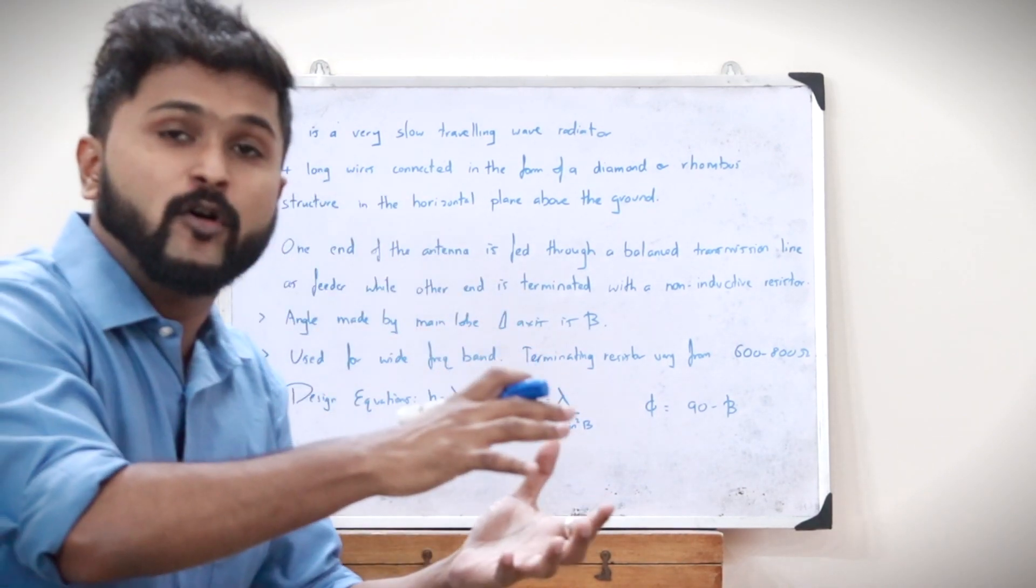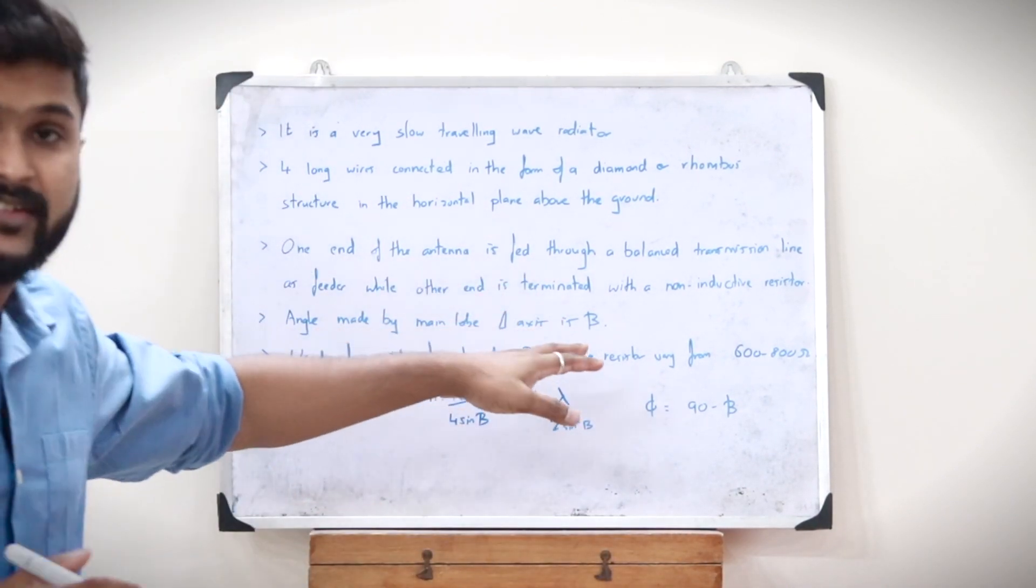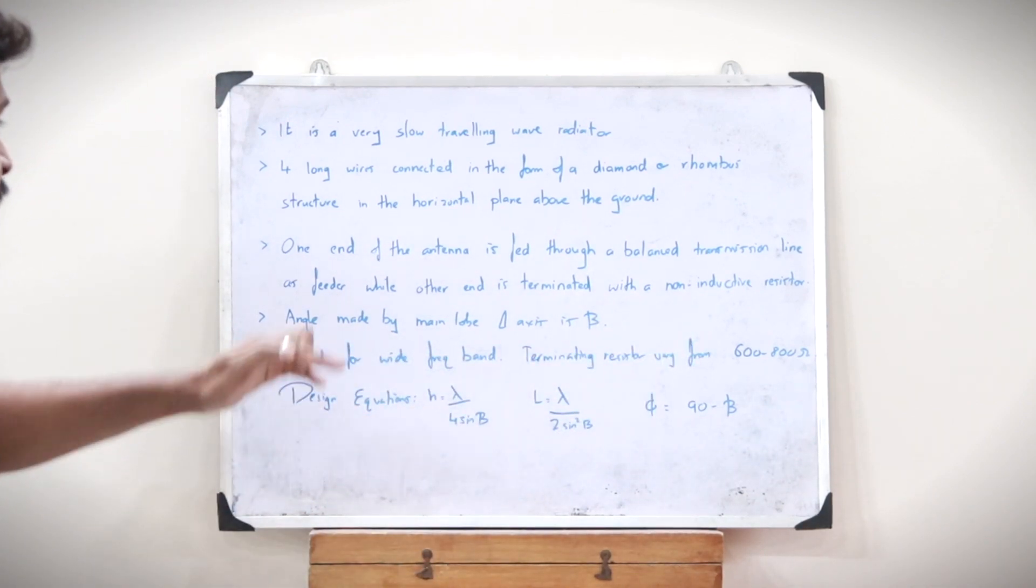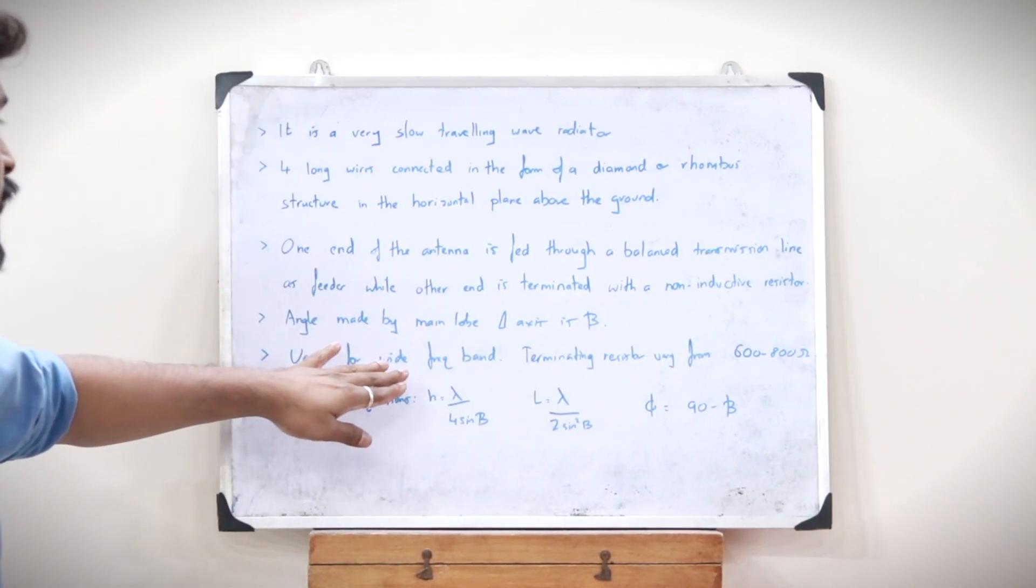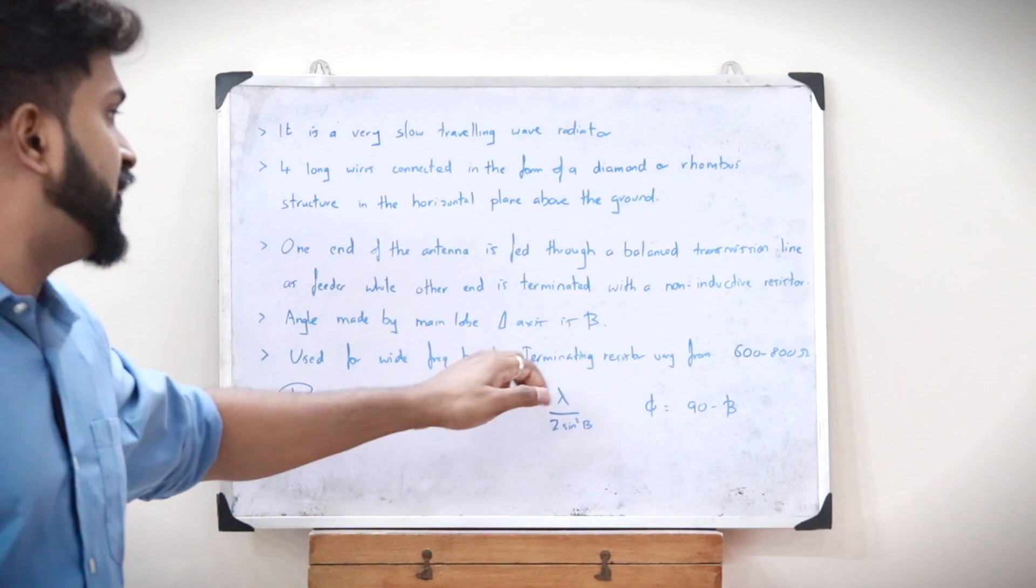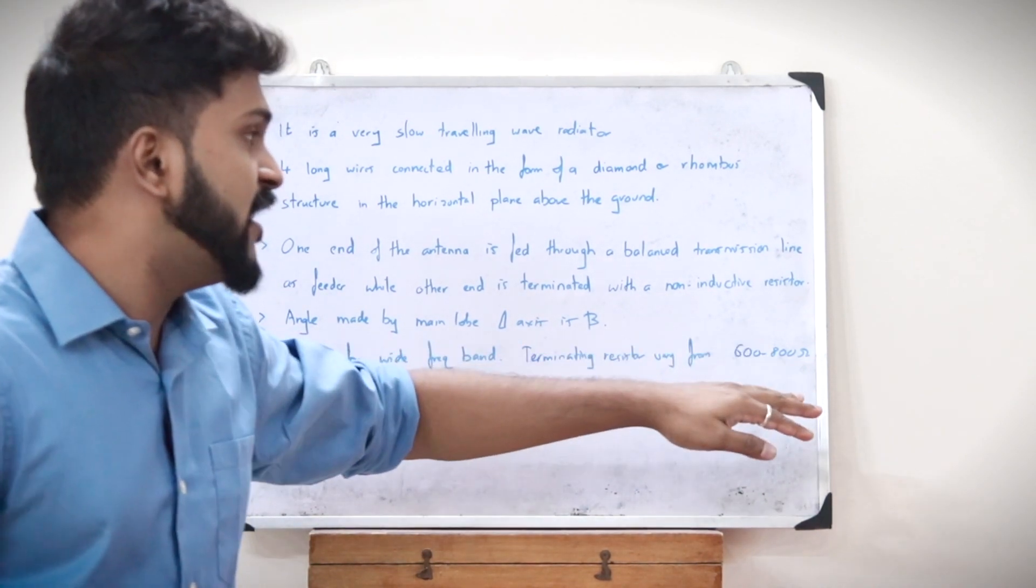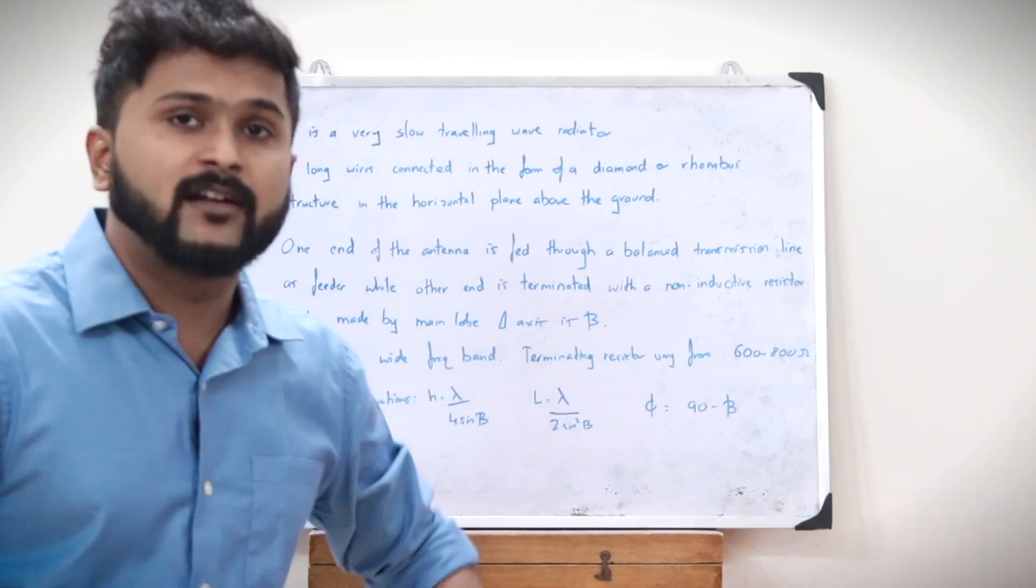The angle made by the main lobe and the axis is referred to as beta. This type of antenna is used for wide frequency band, and the terminating resistor can vary from 600 to 800 ohms.